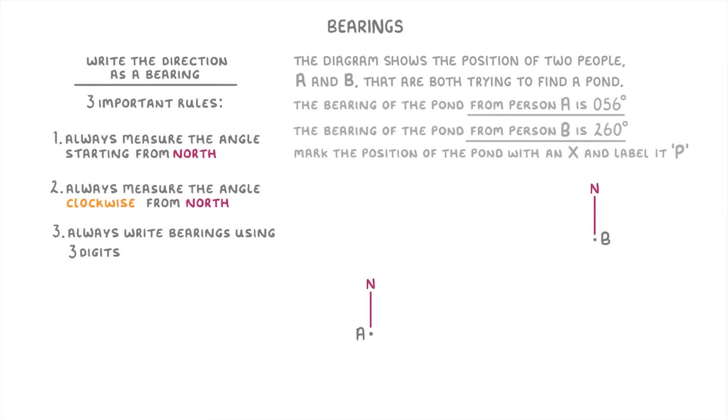So the first thing that we would normally do is draw our north arrows, but they've already given us those in the question. So the first thing that we're gonna have to do is draw our bearings onto the diagram. For the bearing of 56 degrees from A, we can use a protractor to measure a 56 degree angle clockwise from north, and then we can draw our bearing.